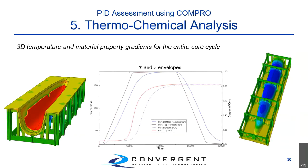When we perform the thermochemical analysis on the canoe fairing for the Boeing 777, we can plot the temperature and degree of cure envelopes. We can see that the top surface of the part heats up quite a lot quicker than the bottom, with a thermal lag and thermal gradient between these two surfaces, which also translates into a degree of cure gradient between top and bottom. Depending on the specification, this helps you troubleshoot thermal problems and analyze whether your process corresponds to what's set out in the specifications.